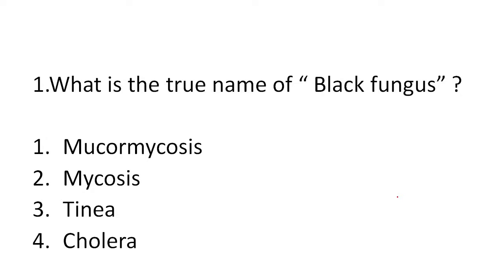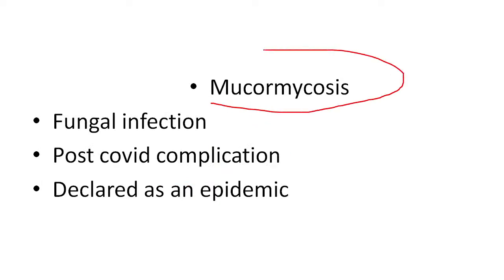The first question is: what is the true name of black fungus? Option one: mucormycosis. Two: mycosis. Three: tinea. Four: cholera. The answer is mucormycosis. This is very famous news across social media and newspapers. Remember, mucormycosis is a fungal infection and it is a post-COVID complication.